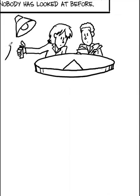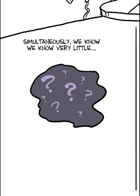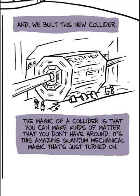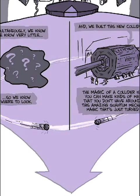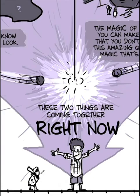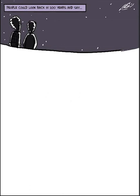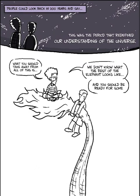Here, we're about to illuminate a huge fraction of the universe nobody's ever looked at before. It's an amazing age of exploration. Simultaneously, we know that we know very little, which is important. So we know where to look. And we built this huge new tool. We have this collider. And the magic of a collider is you can make kinds of matter in a collider that you don't have around. It's this amazing quantum mechanical magic that's just turned on that's going to help us answer these questions. So these two things are coming together right now. People could look back in 200 years at these years and think, this was the period that redefined our understanding of the universe. What you should take away from this is, we don't know what the rest of the elephant looks like at all. And you should be ready for some surprises.